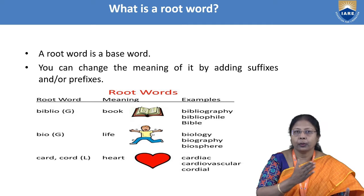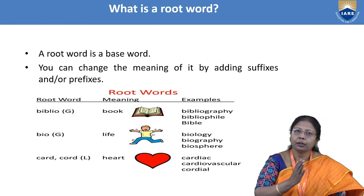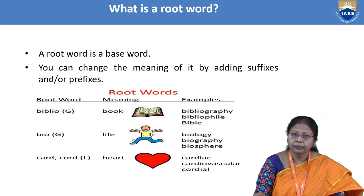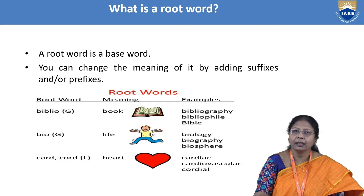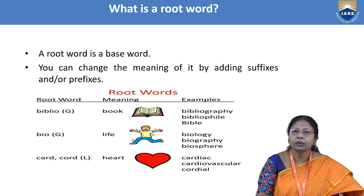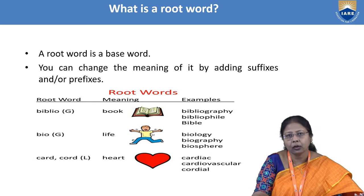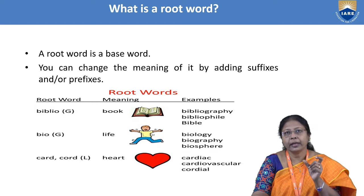The next root word is 'bio,' which means 'life.' When we add suffixes to the root word 'bio,' we get words like 'biology,' 'biography,' and 'biosphere.' The root word 'card' (C-A-R-D) means 'heart.' When we add the suffix '-iac,' we get 'cardiac.' 'Cardiovascular' is another example. Without the root word, the suffix '-iac' alone has no meaning. So the root word is the base word.